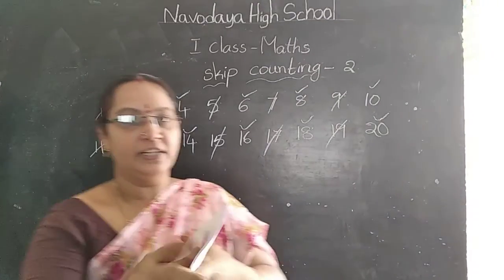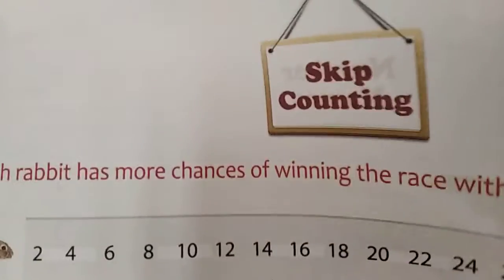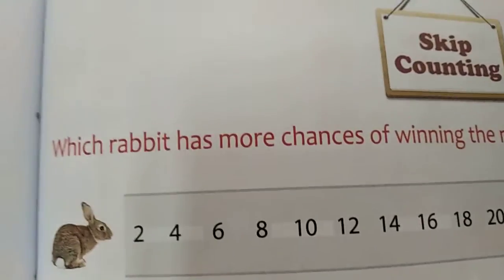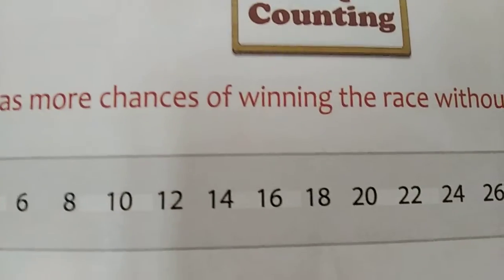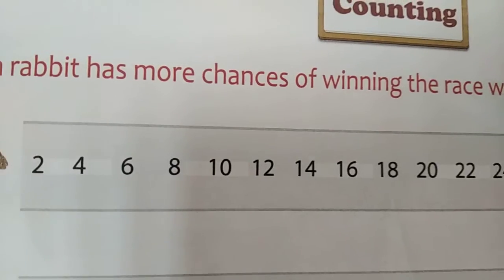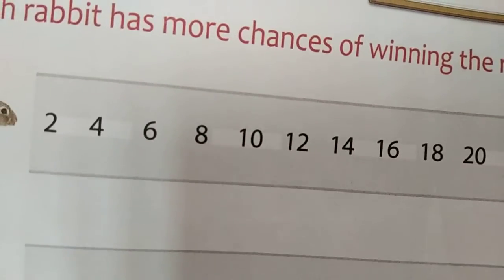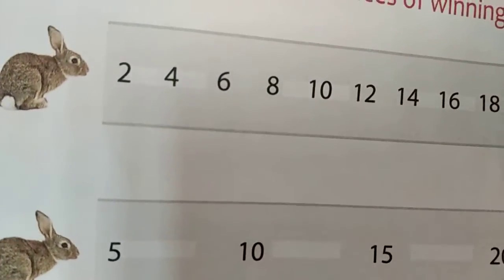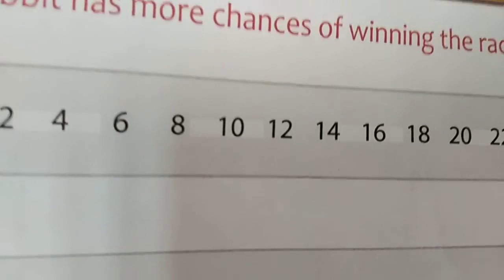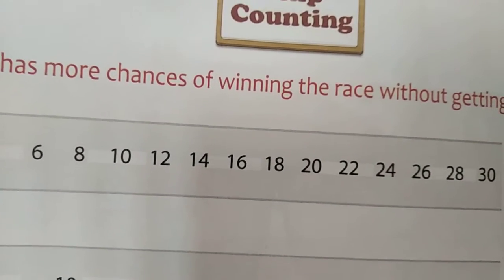Page number 43 — skip counting. Here one rabbit is there. Which rabbit has more chances of winning the race without getting tired? Skip counting of 2. This rabbit jumps 2 — after 4, 6, 8, 10, 12, 14, 16, 18, 20. Like this. This is skip counting of 2.